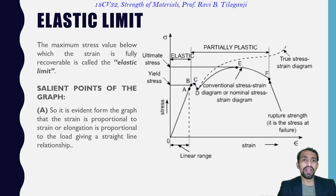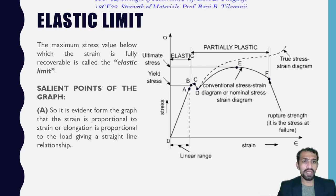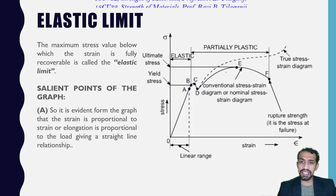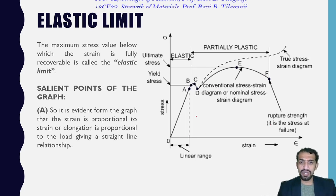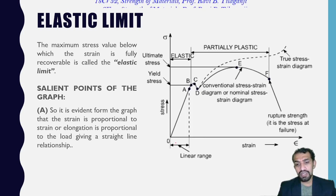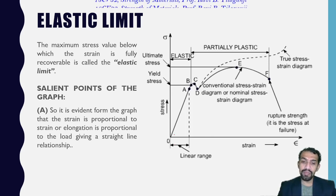When we come to the elastic limit part, we can see a graph showing ultimate stress, yield stress, stress and strain, linear range, partial plastic, elastic, with points A, B, C, D, E, F, and axes labeled sigma (stress) and epsilon (strain). This graph is known as the stress-strain graph when mild steel is considered for the tension test, and with the help of this graph we can understand the elastic property of the material.